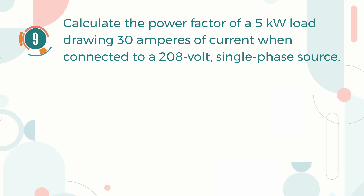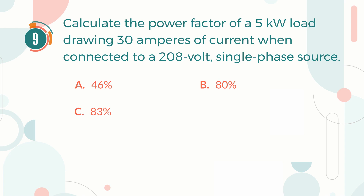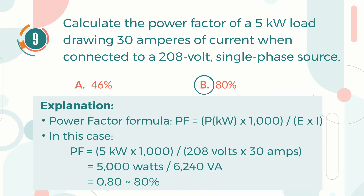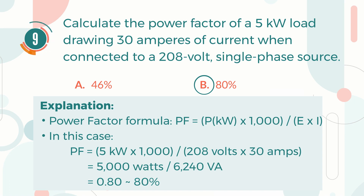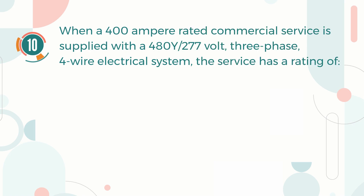Number nine: Calculate the power factor of a 5 kilowatt load drawing 30 amperes of current when connected to a 208 volt single phase source. A) 46%, B) 80%, C) 83%, D) 92%. The correct answer is B, 80%. We apply the power factor formula: power factor equals power in watts divided by the multiplication of voltage in volts and current in amperes. Power factor equals 5,000 watts divided by (208 volts × 30 amps), giving the answer of 0.8 or 80%.